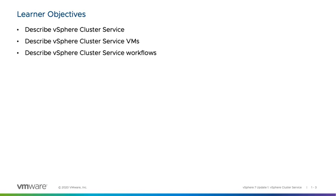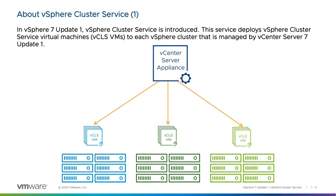In vSphere 7 Update 1, the vSphere Cluster Service is introduced. This service deploys vSphere Cluster Service virtual machines — vCLS VMs — to each vSphere cluster managed by a vCenter Server 7 Update 1. The vCLS VMs are deployed at cluster creation time after hosts are added to the cluster. In future releases, vCLS VMs will provide cluster services to workloads even if vCenter Server is offline. vCLS VMs are also deployed to existing clusters after vCenter Server is updated to 7 Update 1. vSphere DRS cannot function if there are no vCLS VMs present in the cluster.